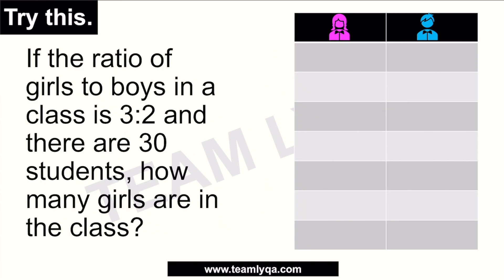Balikan natin yung tanong. Ang ratio ay 3 is to 2 — yun ang ratio ng girls to boys. Ang ibig sabihin, yung girls sila yung 3, yung boys sila naman yung 2. Kung ilalagay natin sa table, ang ibig sabihin noon sa bawat tatlong girls sa klase, merong katumbas na dalawang boys, which forms a total of 5 students.